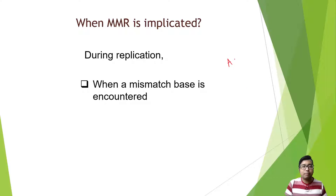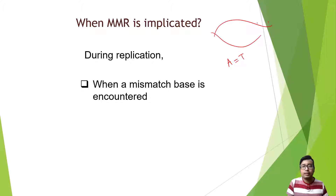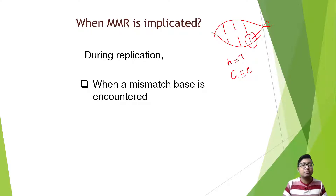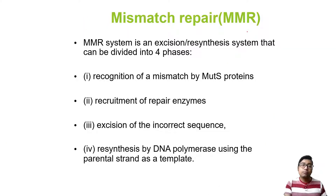What do we mean by match? In the sugar-phosphate backbone, these are the nitrogenous bases. A basically pairs up with T and G matches with C — this is Chargaff's rule. It may happen during DNA replication that any nitrogenous base is wrongly added, resulting in a mismatch.